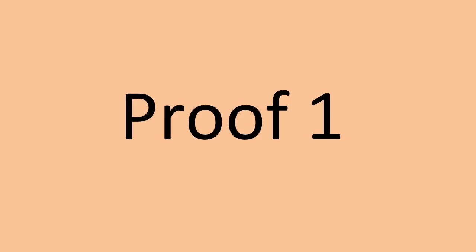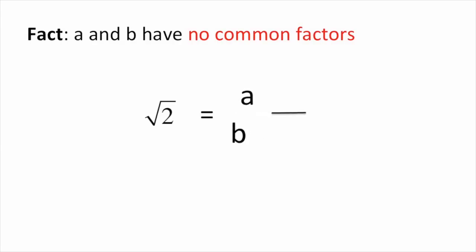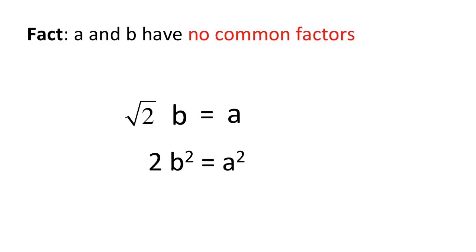Proof 1. This is the classical proof. Assume that we can write root 2 as the fraction a over b, where a and b are positive integers, and it's in lowest form, so there are no common factors. Cross multiply and square both sides to get 2b squared equals a squared.